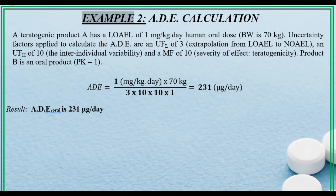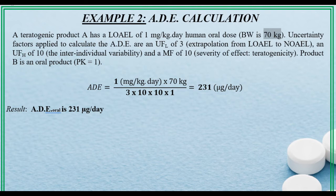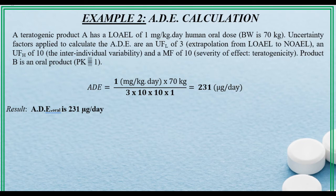Example 2: ADE calculation. A teratogenic product has a LOAEL of 1 mg per kg per day human oral dose. Body weight is 70 kg. Uncertainty factors applied to calculate the ADE are: UFL of 3 (extrapolation from LOAEL to NOAEL), UFh of 10 (inter-individual variability), and an MF of 10 for severity of effect — teratogenicity. Product B is an oral product; PK equals 1.